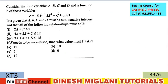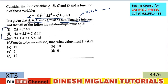Next is a very important question from the CAT and XAT perspective. Consider 4 variables A, B, C, D and a function Z. A, B, C, D must be non-negative integers (0, 1, 2, and so on) and all constraints must hold. Z is to be maximized and I have to find the value of D.